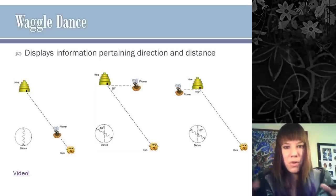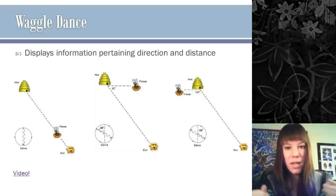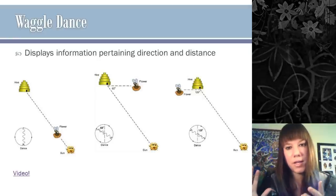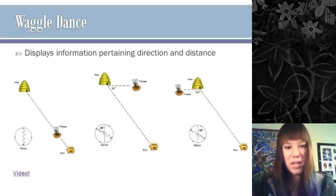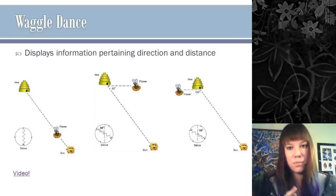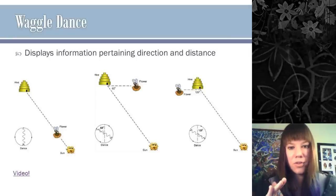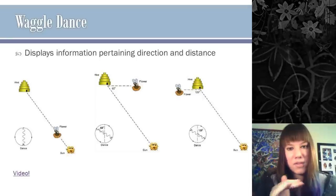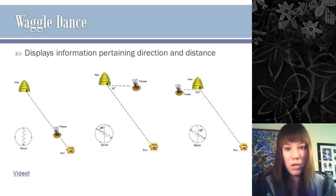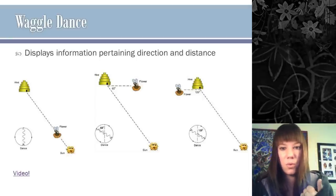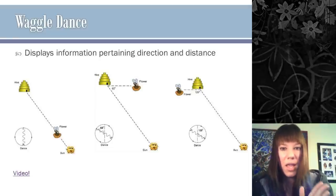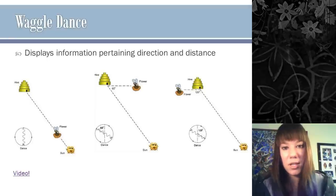If the food is directly in the direction of the sun, the waggle portion is straight up. After that, the bee angles itself based on where the sun is, telling the other bees where to go. In addition to dance speed and waggle angle, both distance and direction to the food source are communicated — it's a remarkable navigation system.